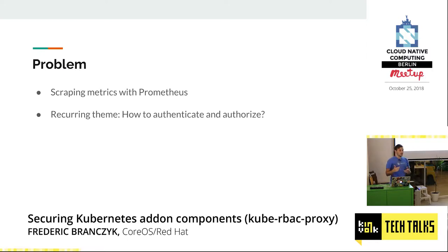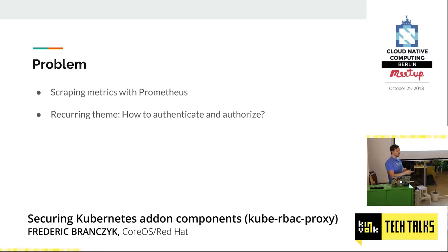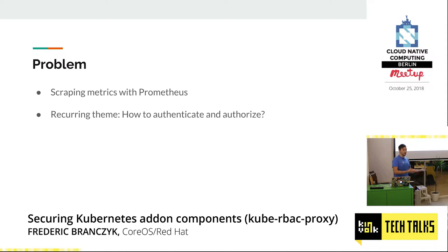I work on Prometheus and also on Kubernetes things. A really common thing that we have is that we want to protect metrics endpoints that Prometheus scrapes from exporters or various metrics sources, so that only Prometheus can actually see this data. It turns out that Kubernetes already has some mechanisms for this that Prometheus already has to be configured for — for example, to collect metrics from the API server or from the Kubelet. This is a recurring theme, and if we're already running within Kubernetes, why not reuse this mechanism that already exists?